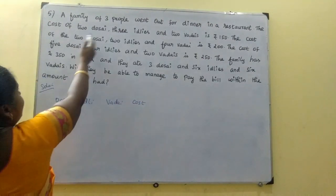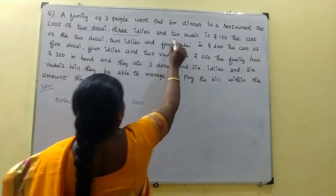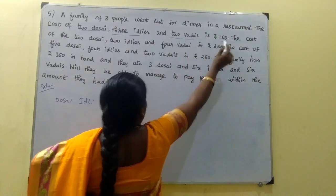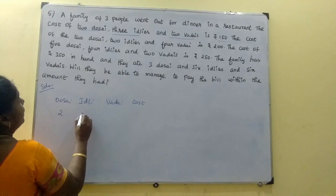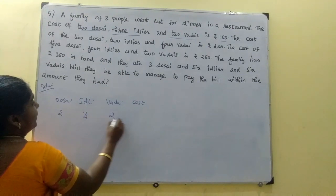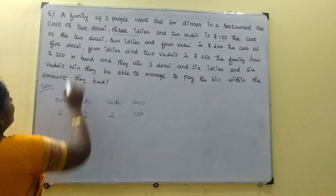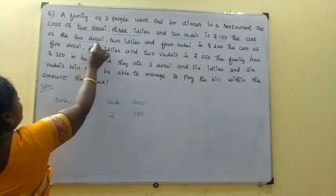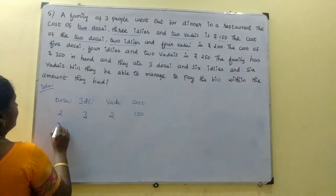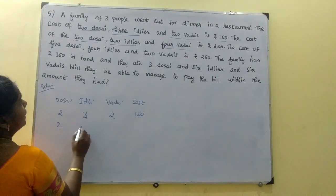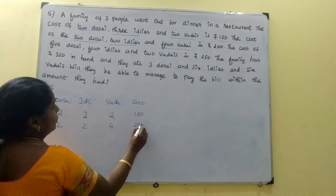So, 2 dosas, 3 idlis, 2 vadas — that is Rs. 150. At the time of the first order: 2 dosas, 2 idlis, 4 vadas. That is the second order: 2 dosas, 2 idlis, 4 vadas — Rs. 200.